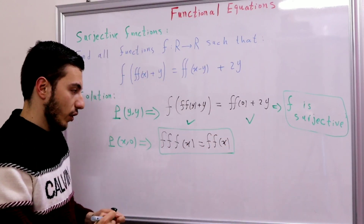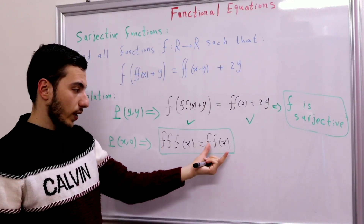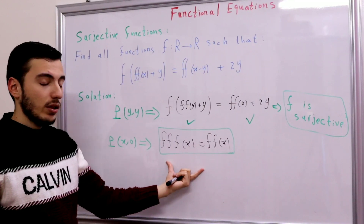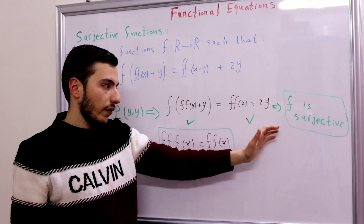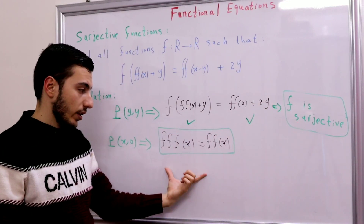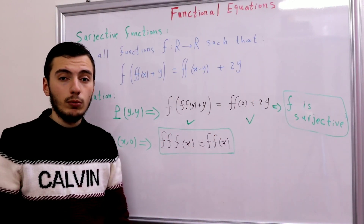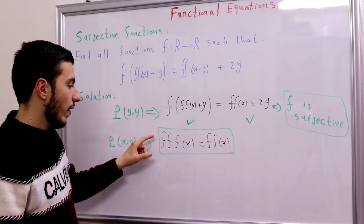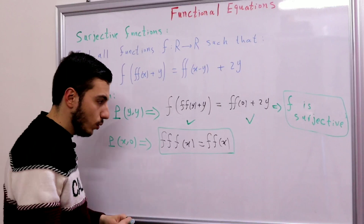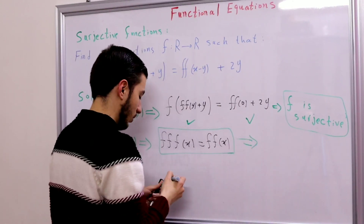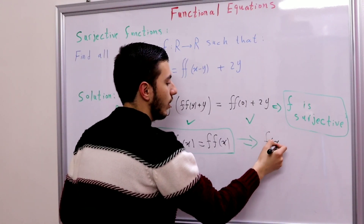What do you think of this functional equation? We have f(f(f(x))) = f(f(x)). Is this useful or not? Actually, if the function is not subjective then this is useless. But since our function is subjective, we have actually solved the problem — and from f(f(f(x))) = f(f(x)) we can conclude that f(x) = x.